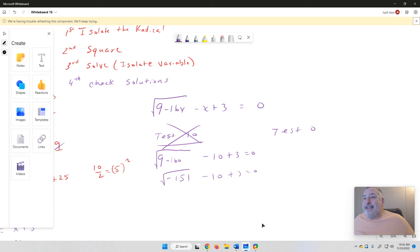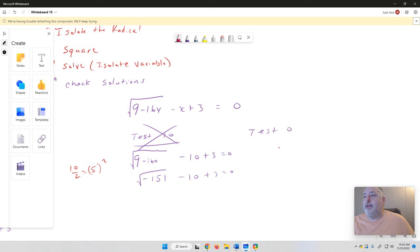So let's test 0. And so we've got square root of 9 minus 0, minus 0 plus 3 has to equal 0. Well, 9 minus 0 is 9, square root of 9 is 3, 3 minus 0 plus 3. Guess what? Does not equal 0. So this has no solution.